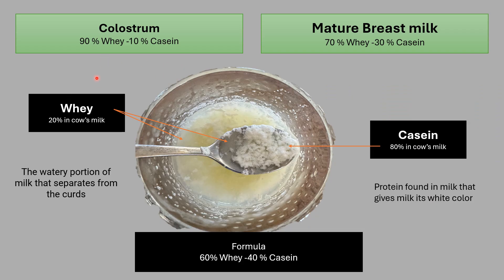Before we go further, let me explain the difference between whey and casein. Whey is the water portion of the milk that separates from the curds. When acid is added, the water portion is the whey and the casein is the coagulated white part of the milk. Casein makes the milk white and is 80% of cow's milk. Colostrum is 90% whey to only 10% casein. Mature breast milk is 70% whey to 30% casein, and formula is 60% whey to 40% casein.